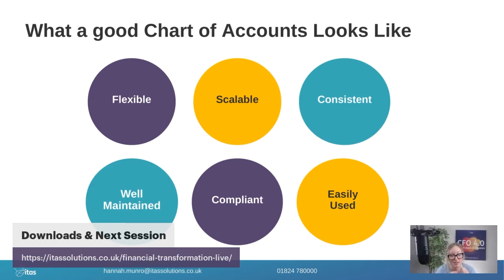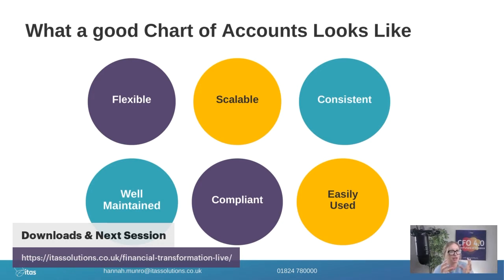The third characteristic is consistency. If you look at a chart of accounts and there's no consistent numbering, no consistency of labeling, and no consistency as to what you're using — whether dimensions or departments — then you have a challenge. You get a higgledy-piggledy approach when you actually go to build, and that makes it very hard to report on and often leads to posting mistakes.